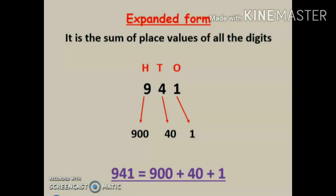Hi everyone, today we are going to learn expanded form and short form of three-digit numbers. Expanded form is the sum of place values of all the digits. Here we are given the number nine hundred forty one.